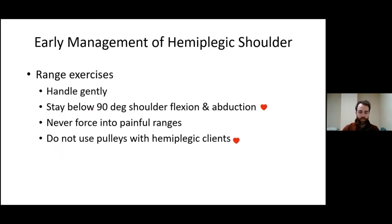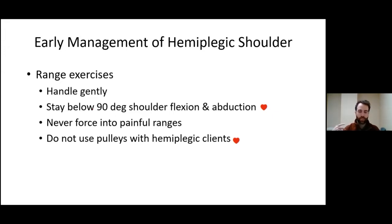Early management also includes range of motion exercises. Patients will often have some to perform throughout the day. If assisting with these, keep these rules in mind: handle gently — the patients themselves don't always know to be gentle; stay below 90 degrees of flexion and abduction; never force into painful ranges; and don't use pulleys, which have been out of favor for years. Another important point is engaging the patient's hand — any time the hand is in use, it forces the upstream muscles — forearm, biceps, shoulder — to activate. The more you can get someone using their hand for activities, the better the shoulder outcome.